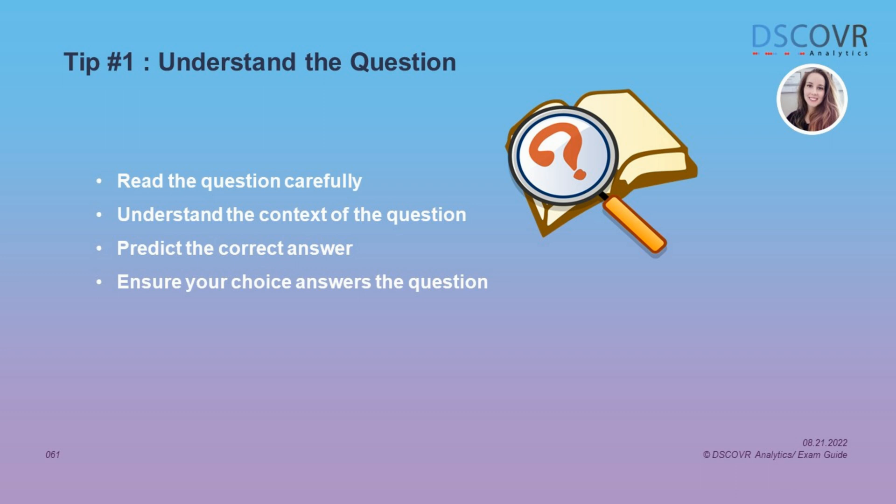If you miss a word or misread the question, or forget what the question is actually asking, make sure to go back and reread it carefully. Try to predict what the correct answer will be, and then when you're scanning through the answers, see if your prediction is one of the choices. If it is, you can be quite confident you have the right answer. When choosing your final answer, make sure your response is actually answering the question being asked. Look for contextual clues — you may notice that more than one answer looks right, but only one will fit the context better than the other.